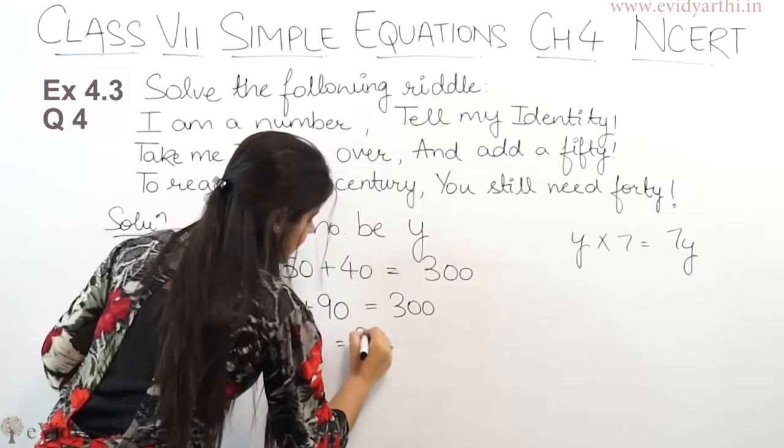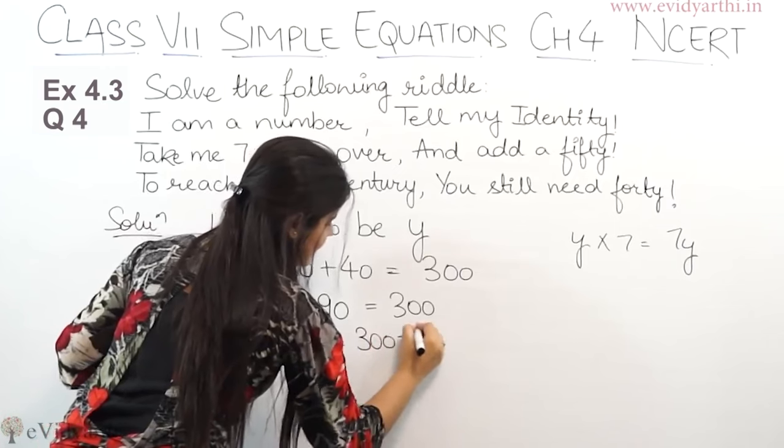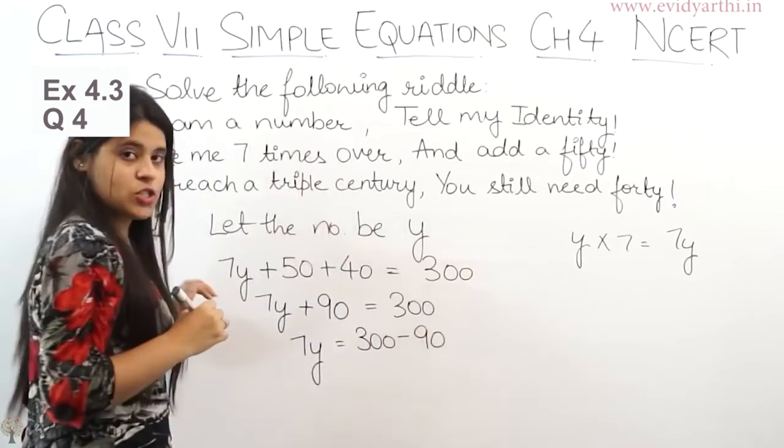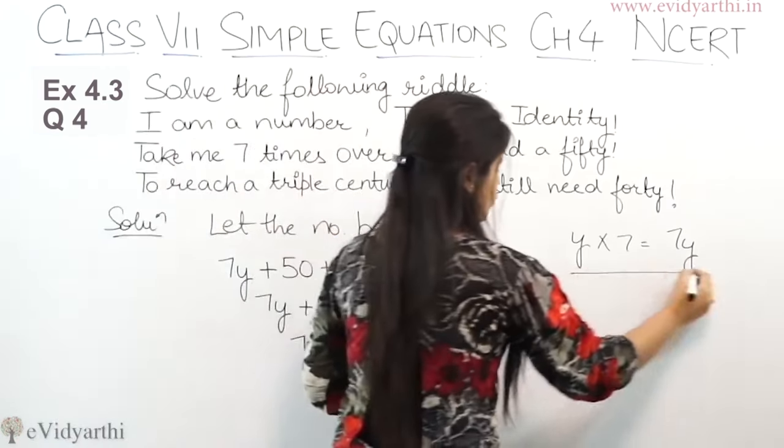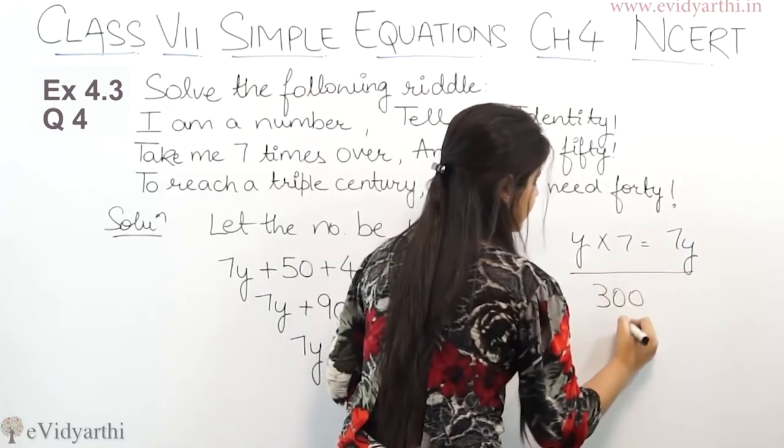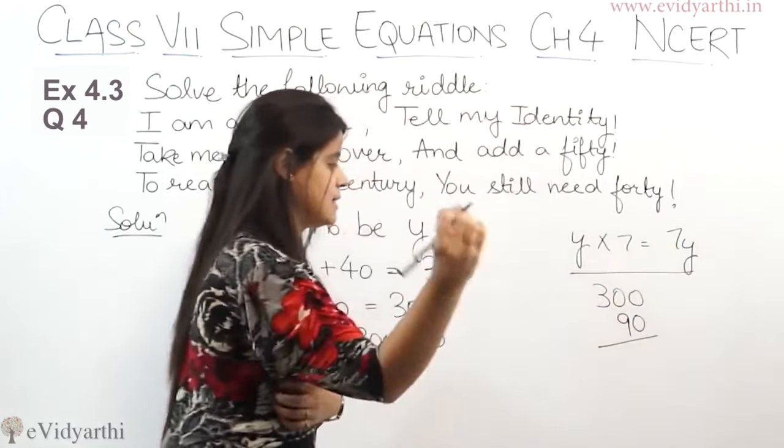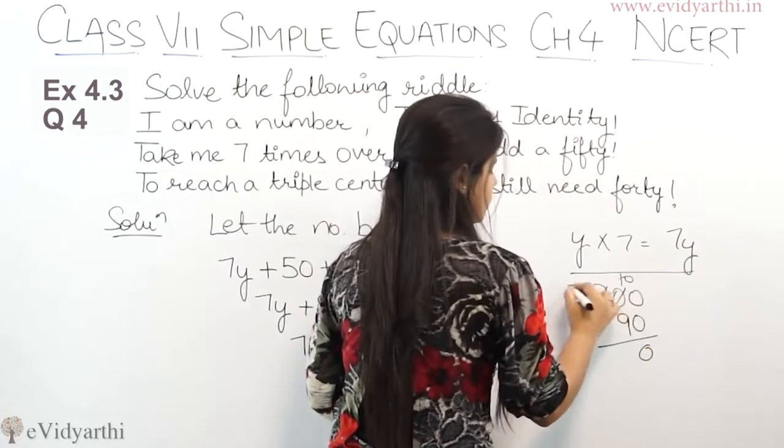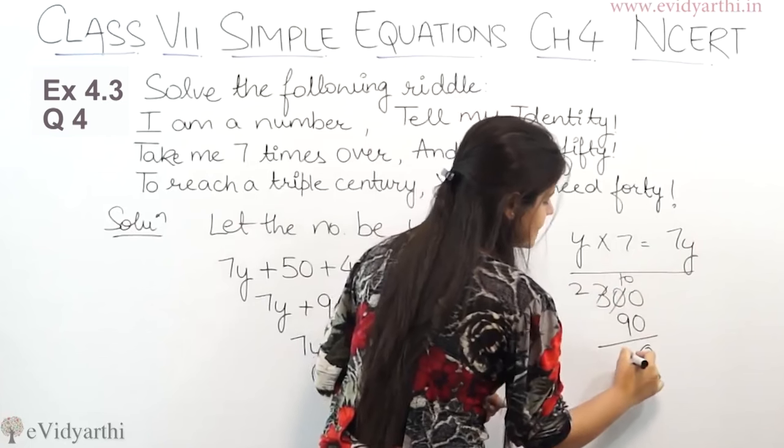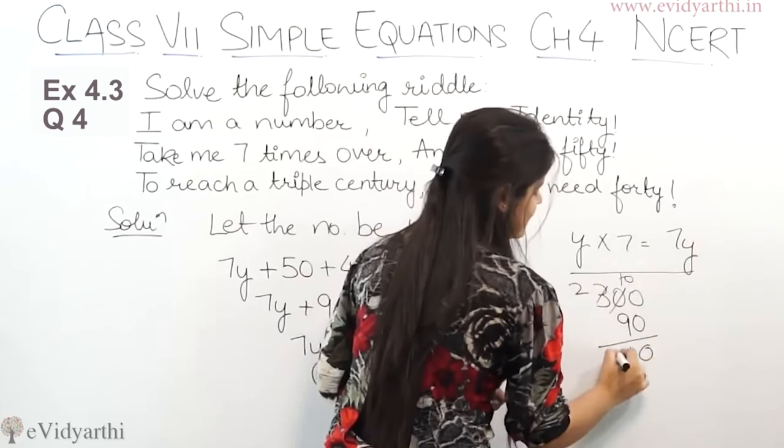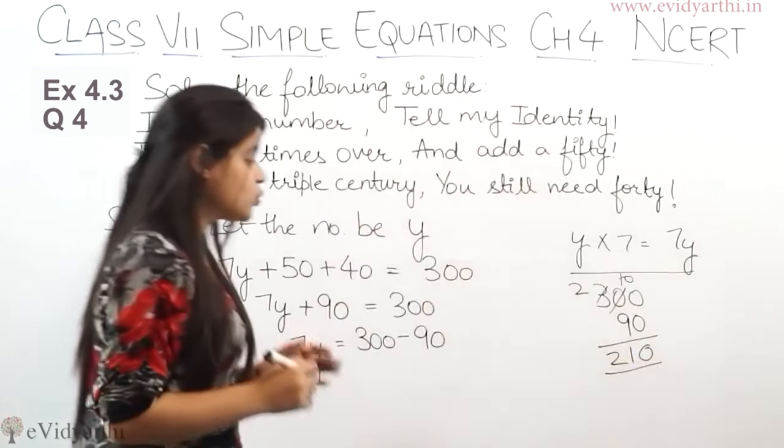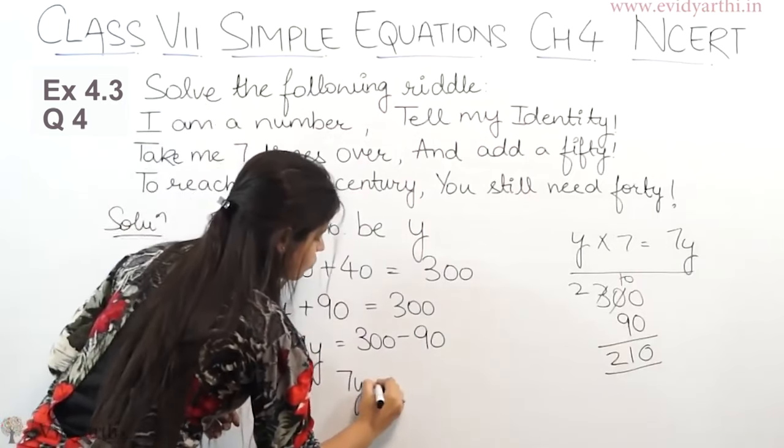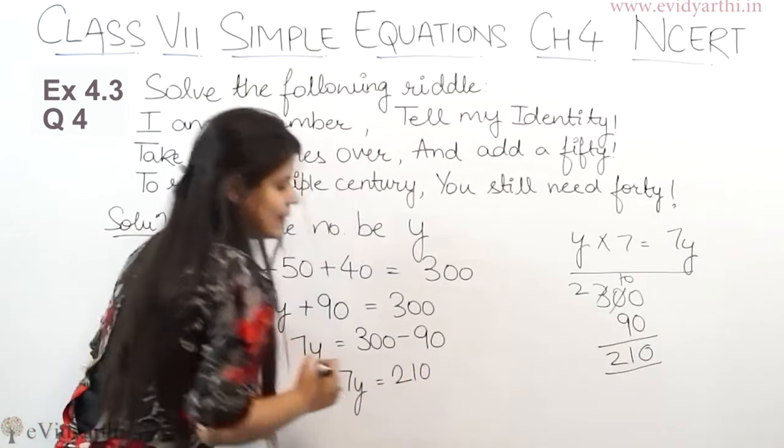7Y equals to 300 minus 90. So now let's subtract this. We have 300, this time we have 90 minus. Zero, this is zero. This will become 10, this will become 2. 10 minus 9 is 1 and this is 2. So we have 210. Means 7Y equals to 210.